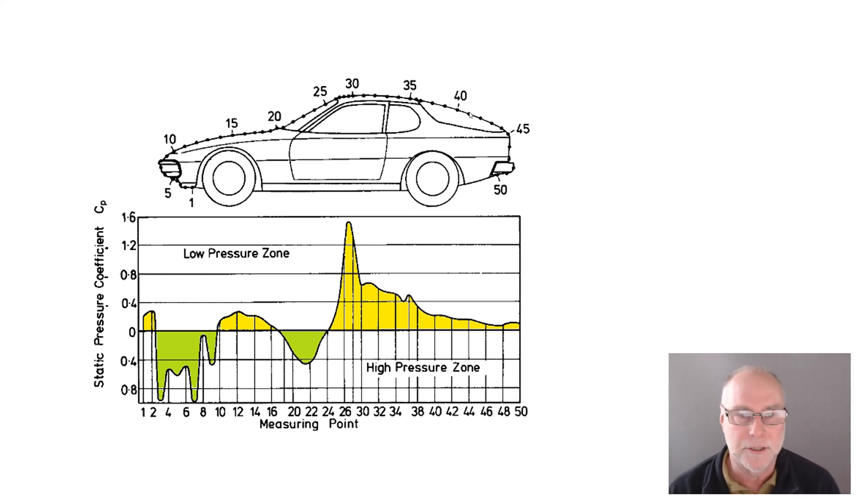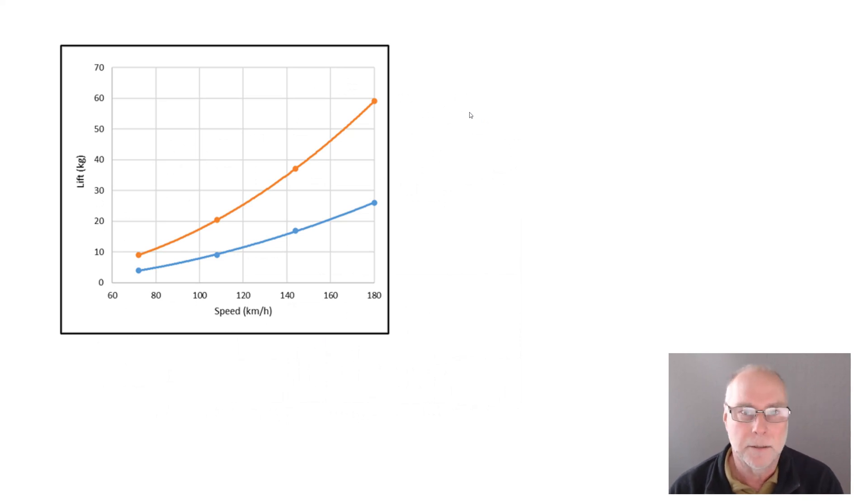Porsche actually published data showing the lift values, showing the lift figures for the 924. So along the bottom axis, we've got speed in kilometres an hour. On the vertical axis, we've got lift in kilograms.